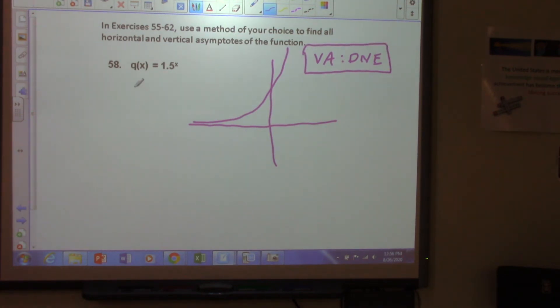What about a horizontal asymptote? One. Zero. One is zero. Y equals zero.